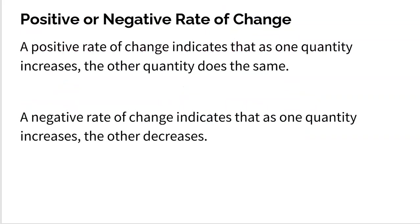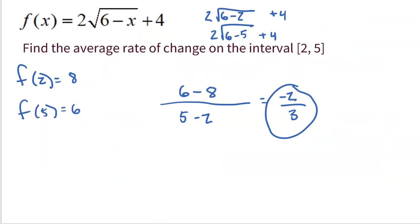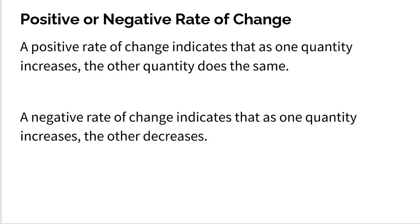A couple of comments on the rate of change: a rate of change can be positive or negative. A positive rate of change indicates that as one quantity increases, the other quantity does the same. We saw that in the example with an average rate of change of two — the line connecting beginning to end had a positive slope. With our answer of negative two thirds, from two to five, if we graphed this function, there would be a negative rate of change between them. So rates of change can be positive or negative.